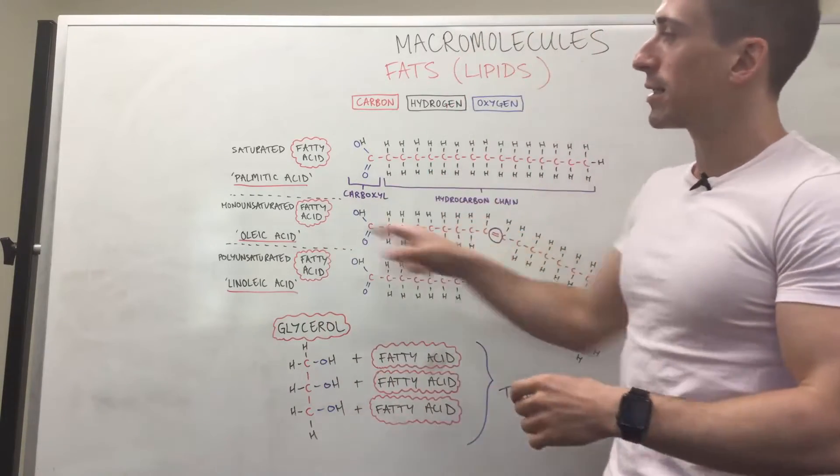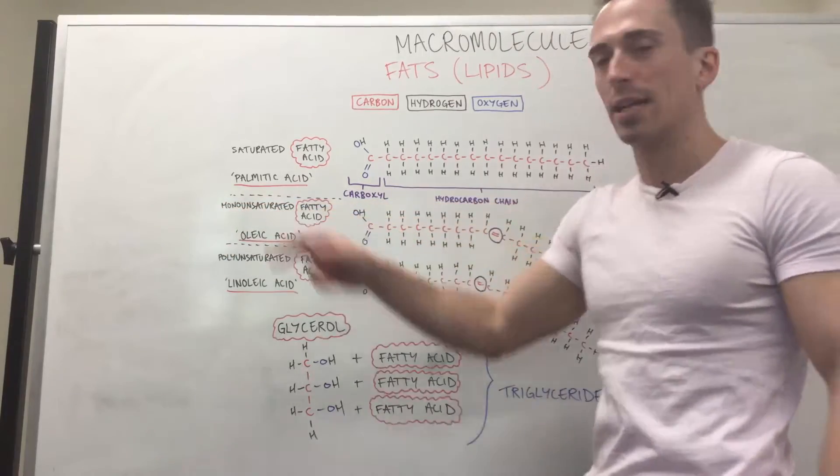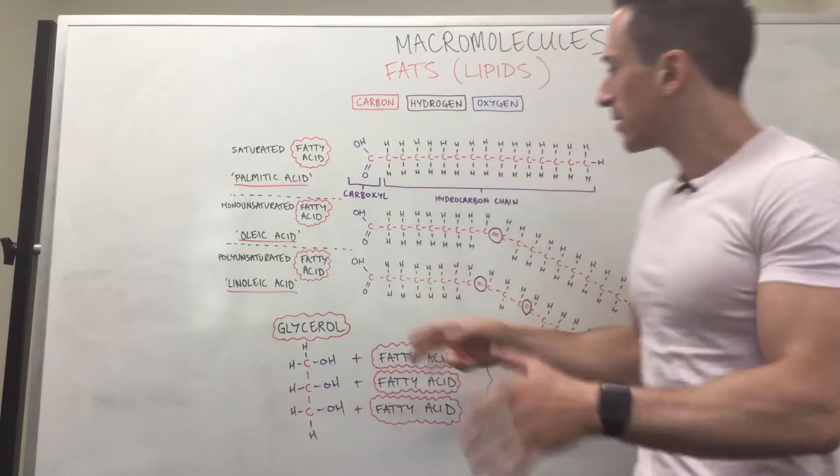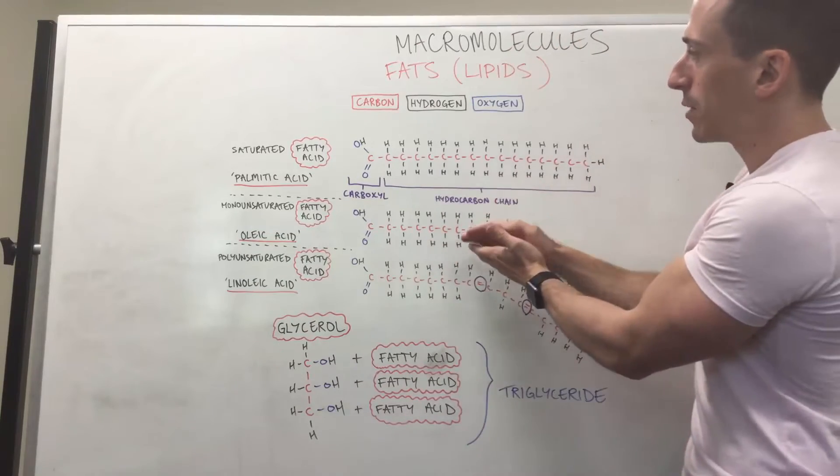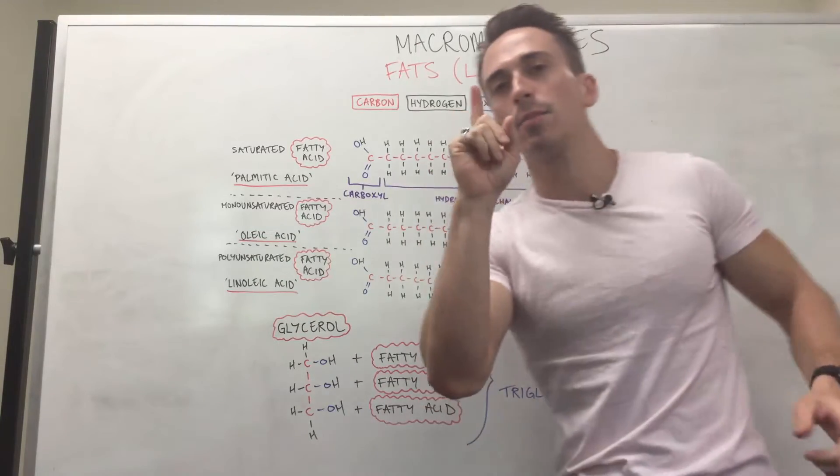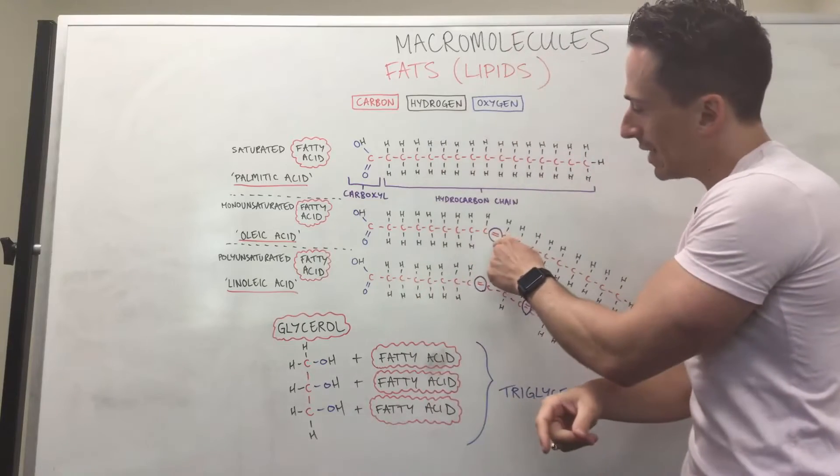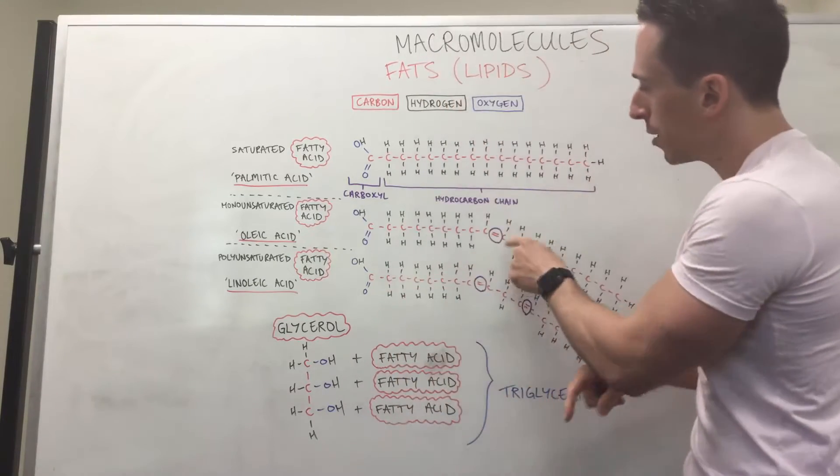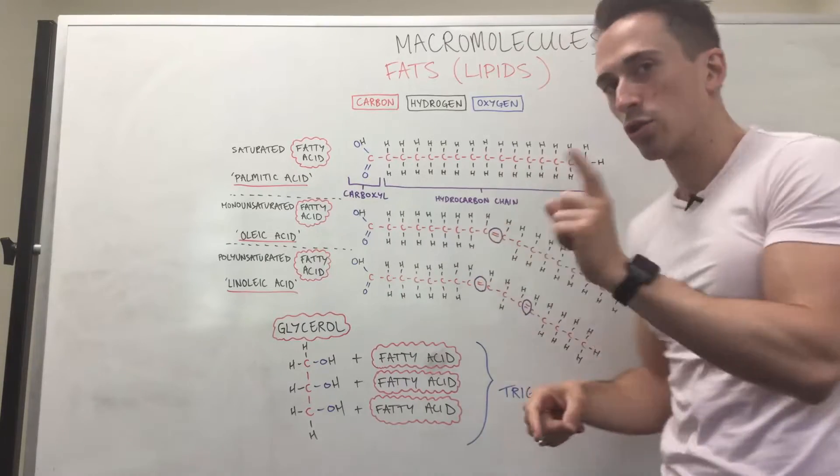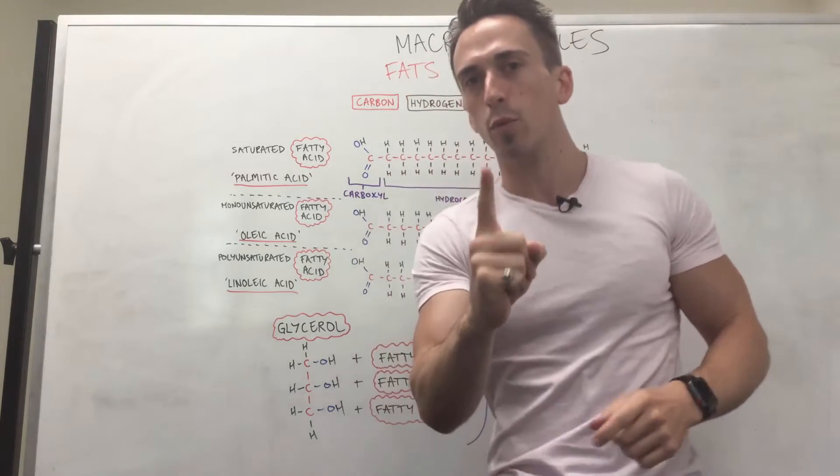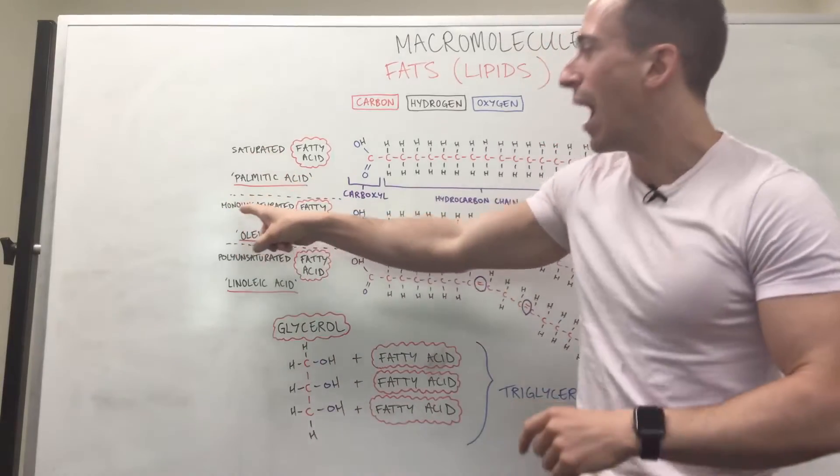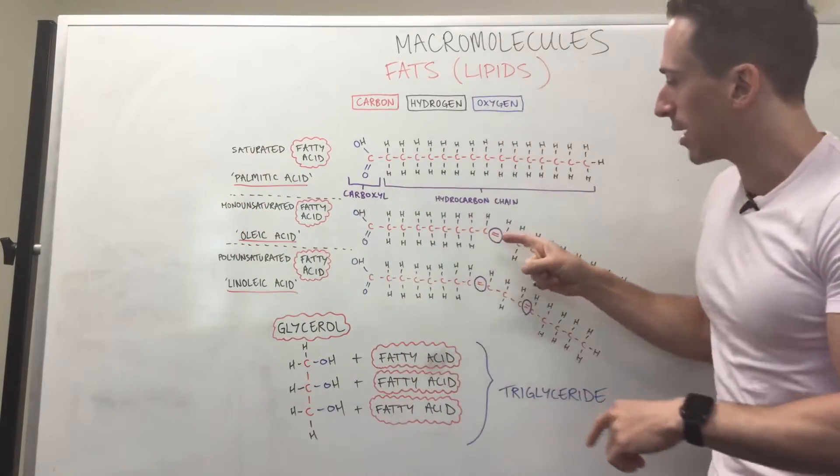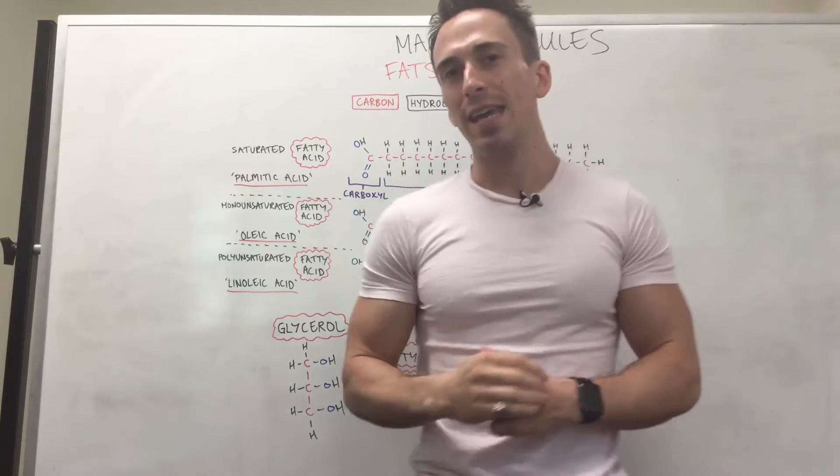Now as we move down, you can see something called a monounsaturated fatty acid. The one I've drawn up here is oleic acid. And you can see that it's very similar to the palmitic saturated acid, except there's one difference: there is a double bond between two carbons. Now this double bond means that the carbon is not saturated with hydrogen ions. And because there's only one double bond, we call it a monounsaturated fatty acid. And what this double bond does, as you can see, it puts a kink in that fatty acid.